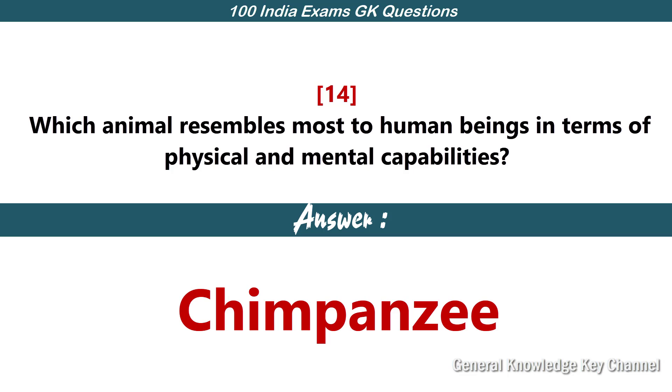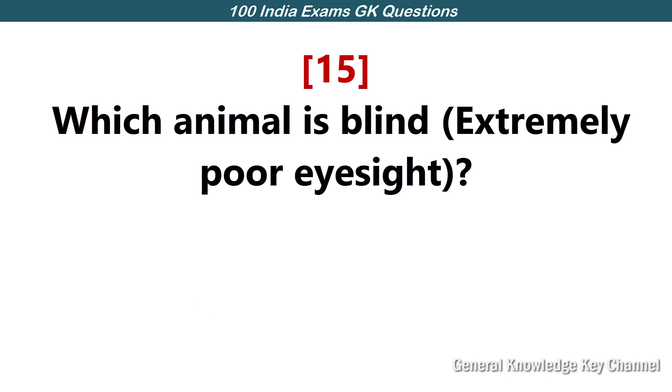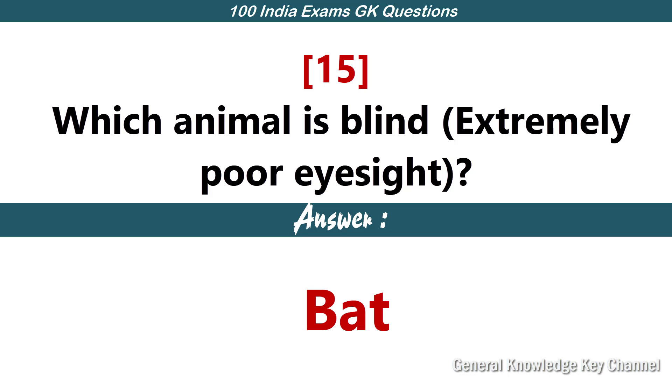Which animal is closest to humans in terms of physical and mental capabilities? Chimpanzee. Which animal is blind, or has extremely poor eyesight? Bat.